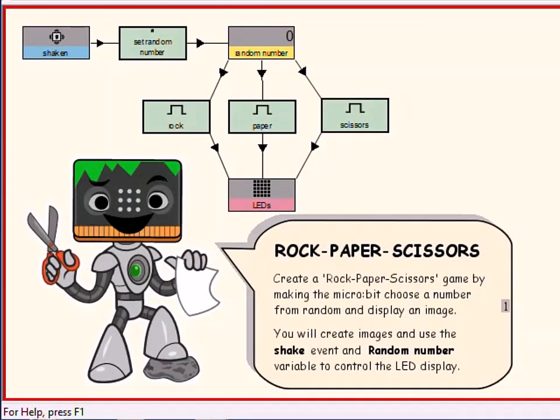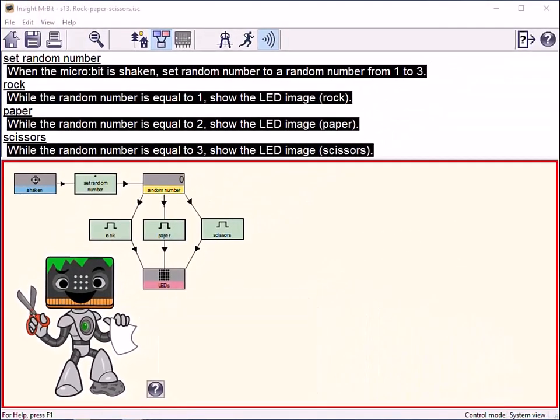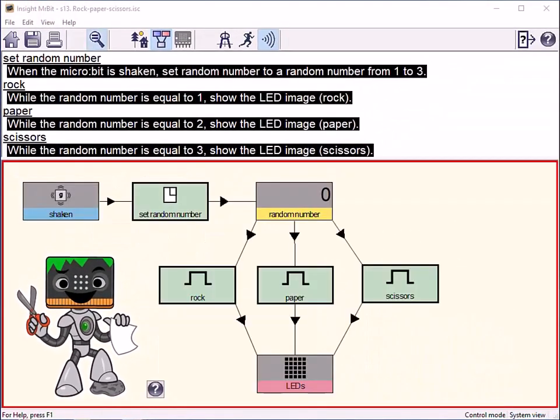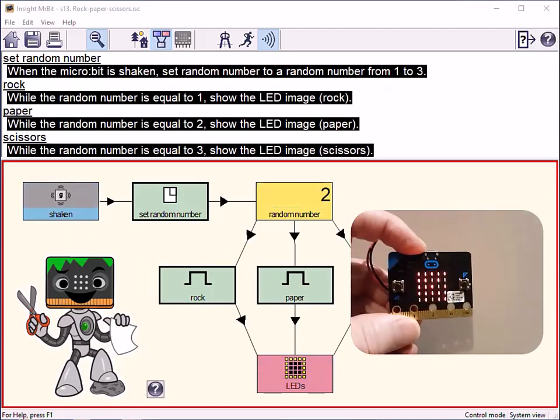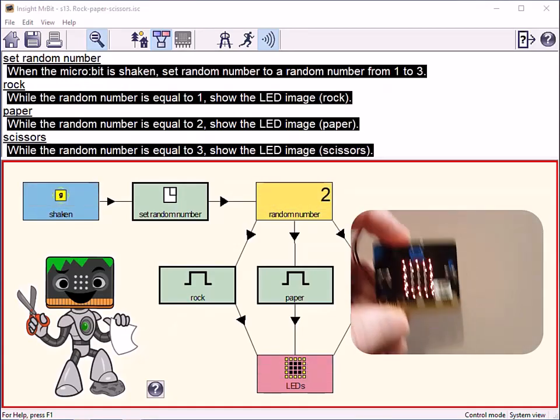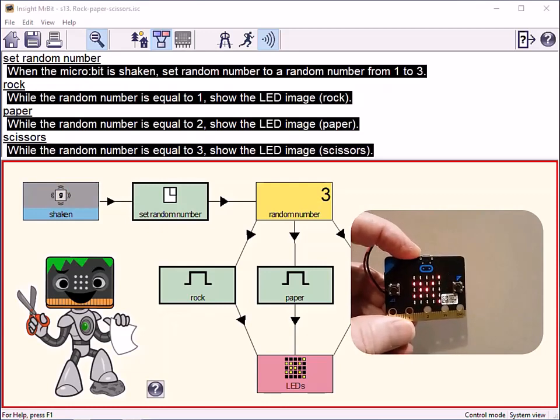This program detects when the microbit is shaken. When this happens, the program creates a number from one to three at random. Each number shows a different image, in this case simulating the rock, paper, scissors game.